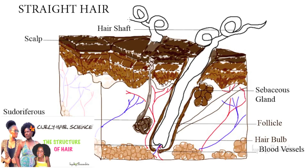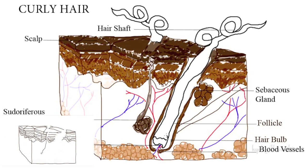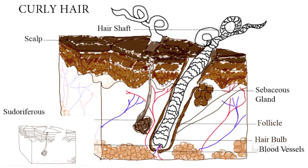As you know from the previous video, hair is made up of a protein called keratin that grows from a sac called the follicle. Cells in the follicle that produce keratin and other proteins become a part of the hair shaft.